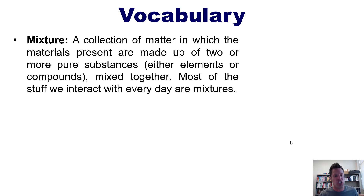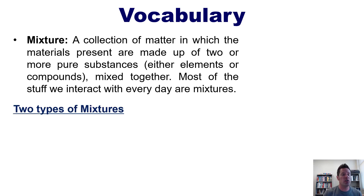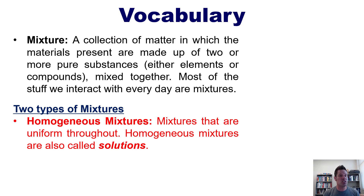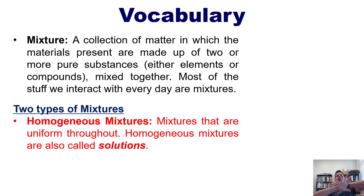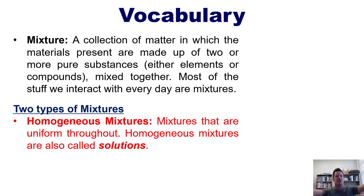Most of the stuff we interact with every day are mixtures. There are two different types of mixtures. The first is a homogeneous mixture, which is a mixture that is uniform throughout. Homogeneous mixtures are also called solutions. If you have two or more substances mixed completely uniformly throughout the entire mixture, then it's homogeneous — everything's evenly distributed with perfect evenness.